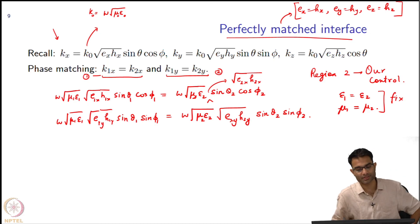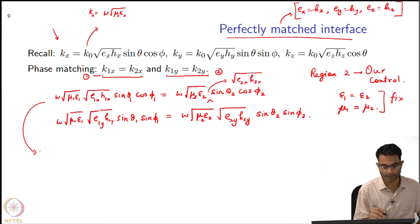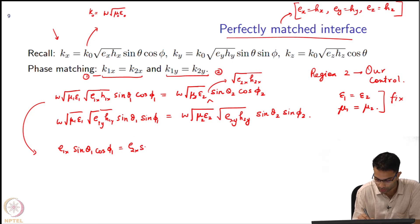So these equations further simplify. For example, this equation over here - square root of e_1x h_1x will become e_1x. What else? These mu's and epsilon_1 cancel off. Then I am going to get sin theta_1 cos phi_1 is equal to e_2x sin theta_2 cos phi_2. And this guy is going to give me e_1y sin theta_1 cos phi_1 is equal to e_2y sin theta_2 sin [phi_2].